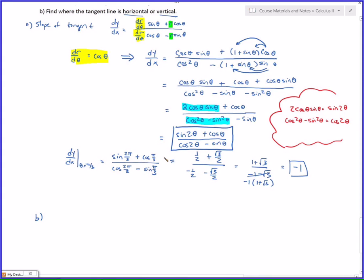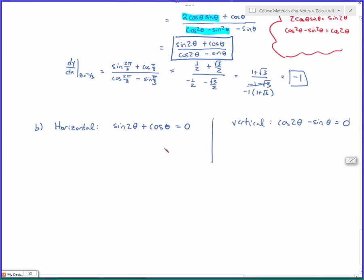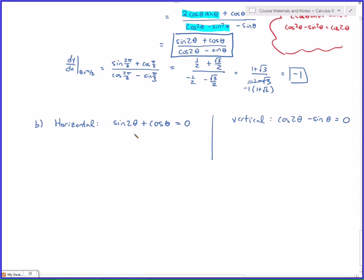So that would be 0 when sine of 2 theta plus cosine of theta equals 0, and it'll be vertical when cosine of 2 theta minus sine of theta equals 0. So solving these for theta in this particular form is not all that useful. I actually don't even like using my simplified version. For all that work, I'm going to actually go back to what we had before. I'm going to use this for the horizontal, I'm going to use this for the vertical.